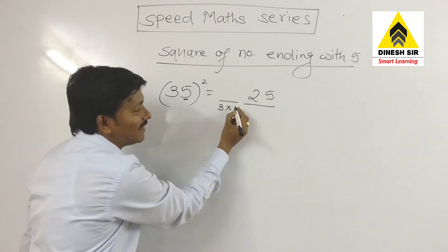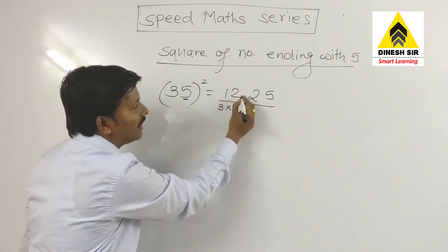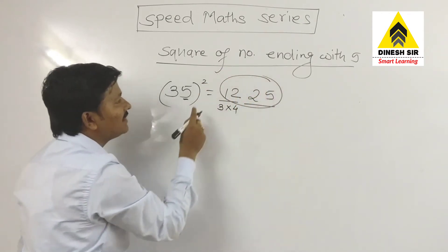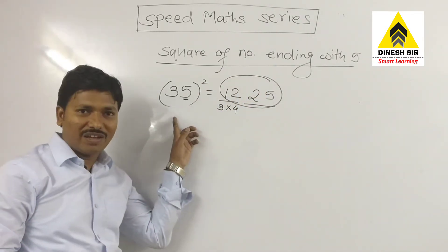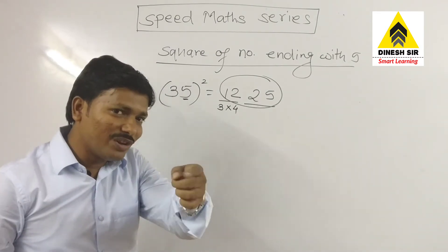So we get the answer 1225 for the square of 35. Let's see one more example.